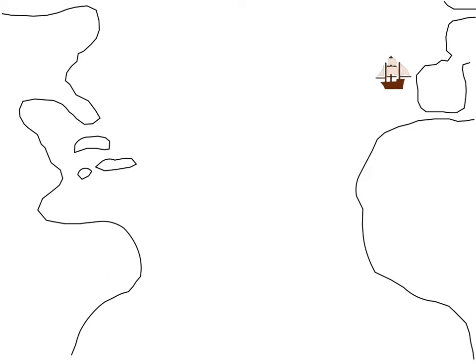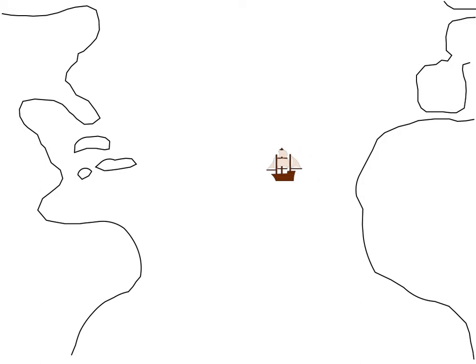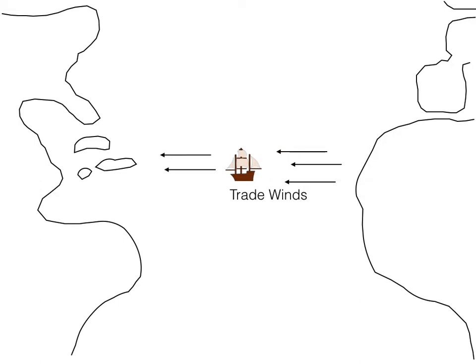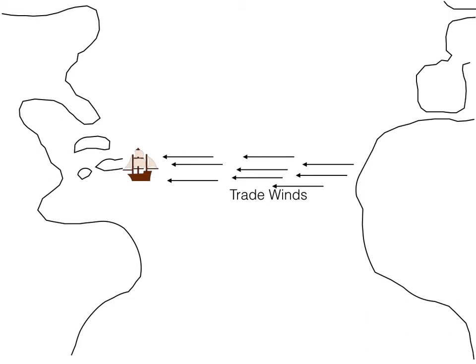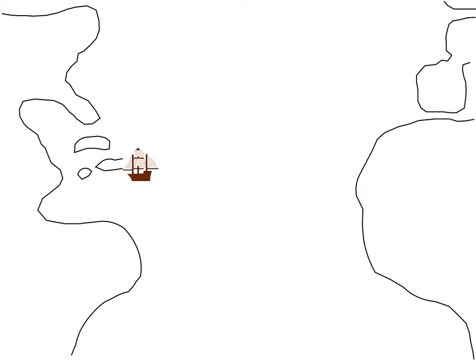From Europe, they would begin sailing south, even if their destination was North America. The Spanish would stop at the Canary Islands to get their last bit of supplies for the journey. The trade winds — winds at this area of latitude — move from east to west, assisting the ship across the Atlantic Ocean.